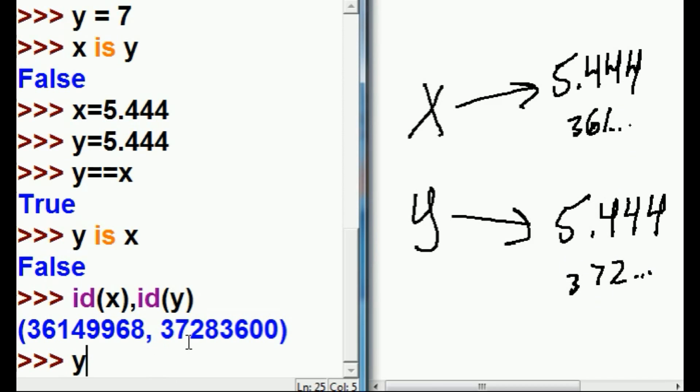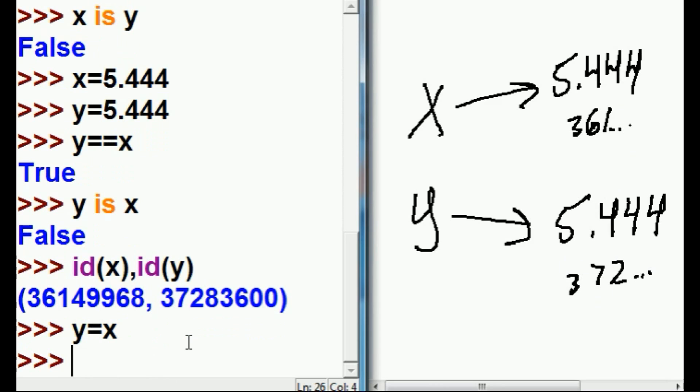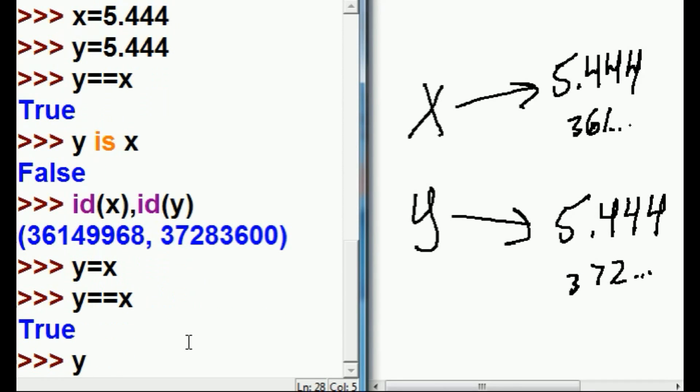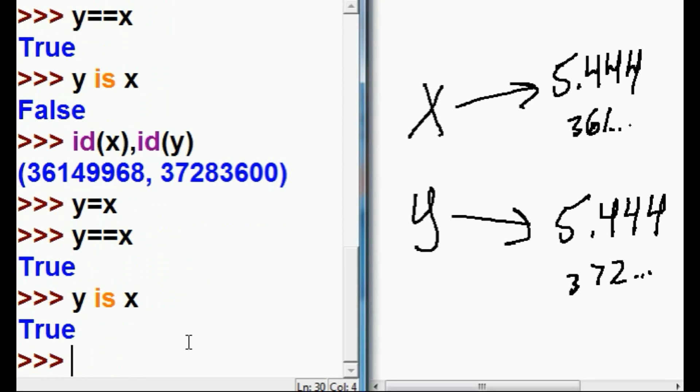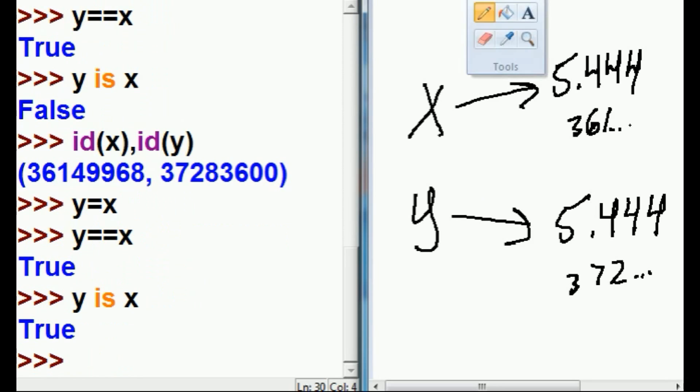What if I take y and I assign him x? Now, what has just happened? y equal equal x? Yes. y is x? True. What just happened now was the system came along and re-referenced the y. y is now equal to x's location. So, y is now referencing this 5.444.